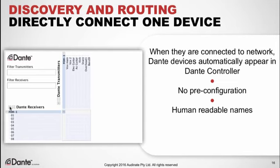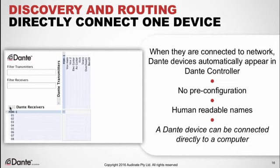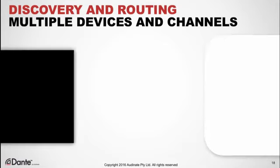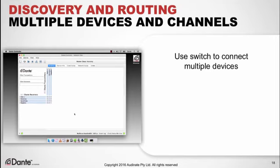There's no need for cryptic numbers. A Dante device can simply be connected directly to a computer and be seen in Dante Controller — no switch is necessary for this very simple type of connection. This setup can be very useful as a simple recording rig using a mixing console and Dante Virtual Sound Card installed on a computer. Now, using a switch to connect several devices at once, they appear automatically just like the first.